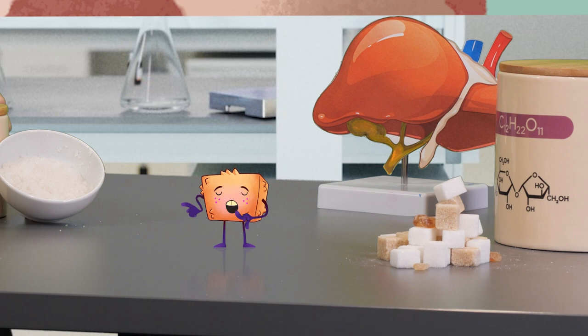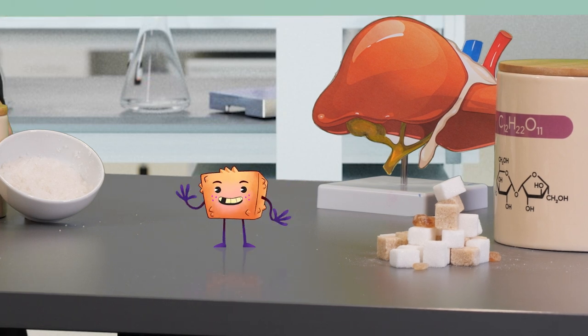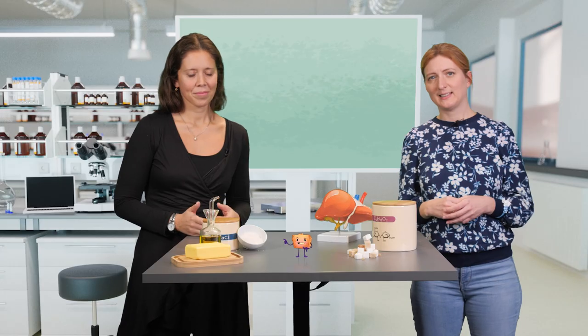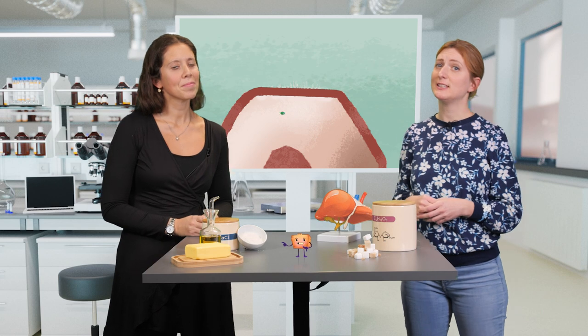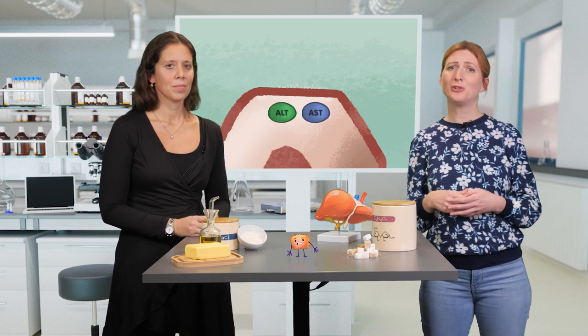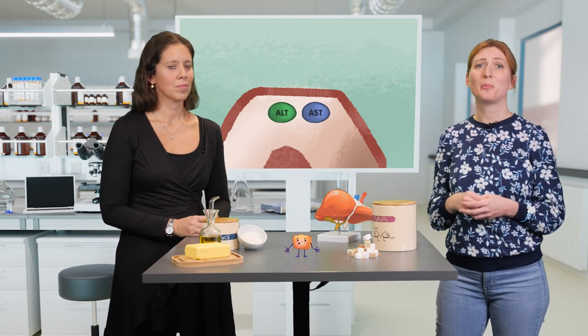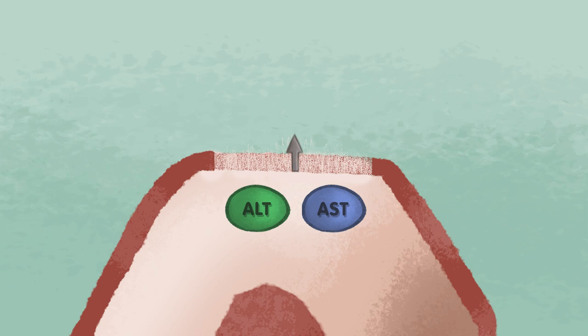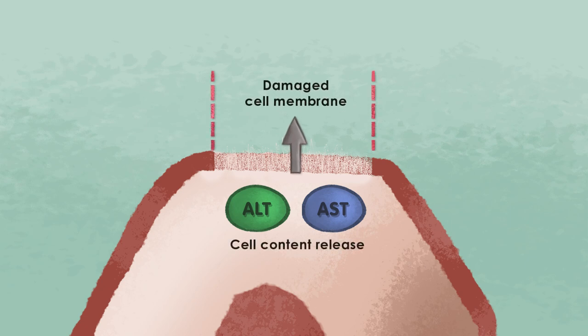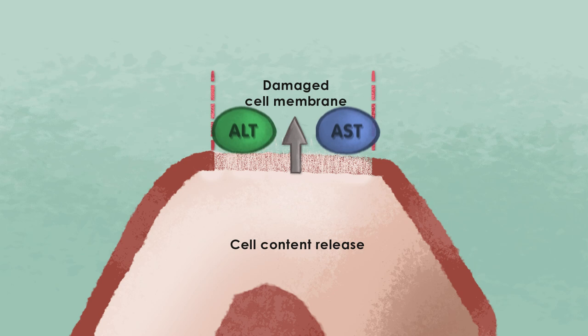But why do AST and ALT become elevated during liver disease? Elevations in serum ALT and AST often result from hepatocellular injury, through damage of the cell membranes and release of the enzyme into the extracellular space. From the ratio between those two markers, a physician can assess whether only the liver is damaged or also other tissues.